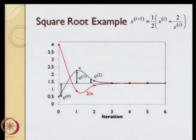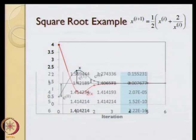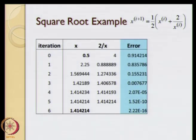What we are going to do in this particular lecture is define the error, define what we mean by error propagation, and try to find out what are the reasons why this particular error comes about. This is the square root example and these are essentially the absolute errors.